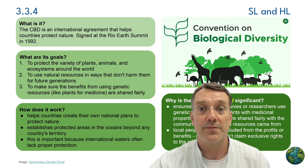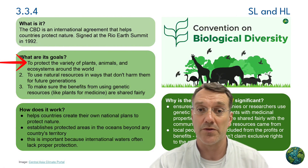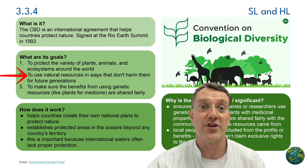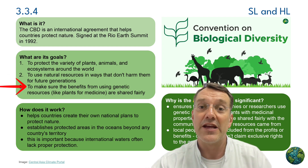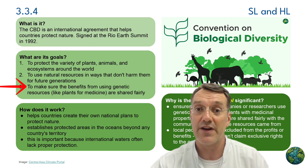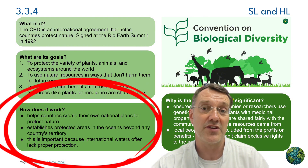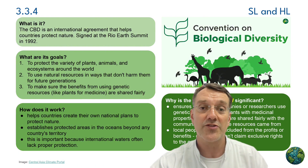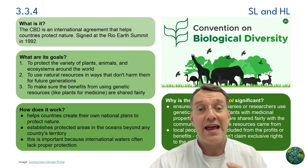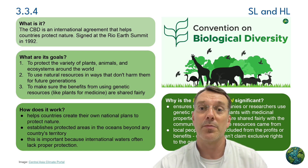The CBD has three main goals. First, to protect the variety of plants, animals, and ecosystems around the world. Second, to use natural resources in ways that don't harm them for future generations. And third, to make sure the benefits from using genetic resources like plants for medicine are shared fairly. The CBD also helps countries create national biodiversity strategies and establishes protected areas in the oceans beyond any country's territory.